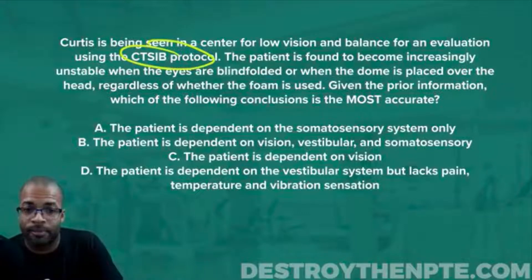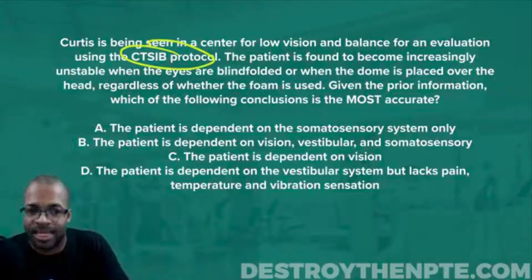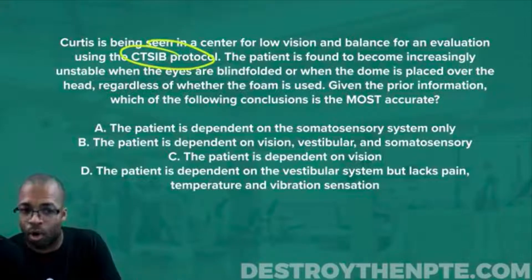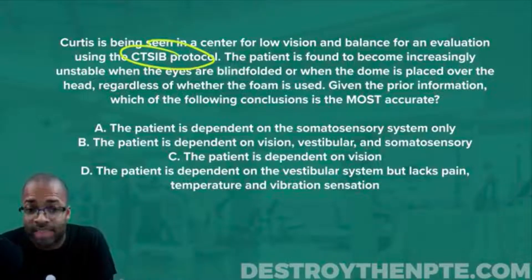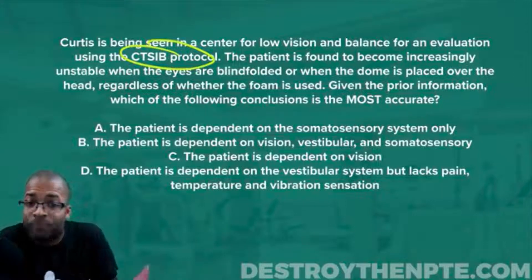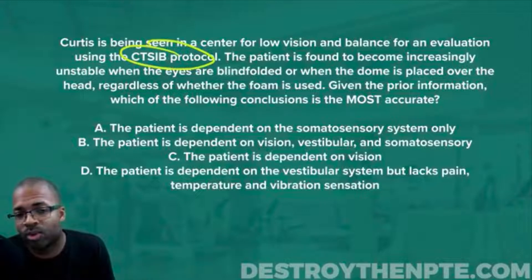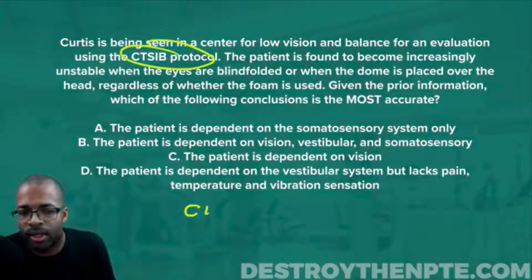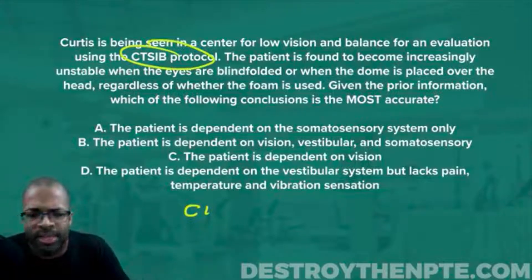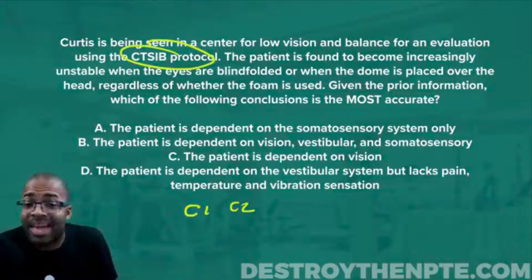This sentence is actually giving us four of the six conditions, telling us the patient is unstable in four of them. Condition 1 (C1): eyes open, level floor — nothing influencing them. Condition 2 (C2): eyes closed on level ground. Condition 3 (C3): eyes open but domed up, dome placed over the head.